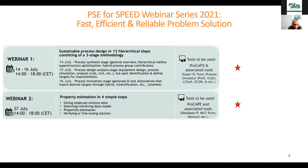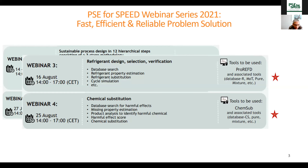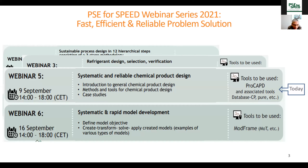This is the fifth webinar of the 2021 series. Webinar 1 was a three-part series on 14, 15, 16 of July. Webinar 2 was on 27th July on property estimation. Webinars 3 and 4 were in August — 3 was on refrigerant design, 4 was on chemical substitution. And we are on the 5th in September, which is on systematic and reliable chemical product design.